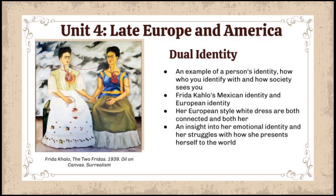Moving on to unit four, late Europe and America, we're looking at the piece The Two Fridas, where we see the topic of dual identity. This piece is an example of a person's identity — specifically Frida Kahlo — and how who you identify with as a person can conflict with how society sees you. Frida Kahlo's Mexican identity, seen through her Tehuana dress, and her European identity, reflected in her European-style white dress, are both connected and both are her. This piece is an insight into her emotional identity and her struggles with how she presents herself to the world.